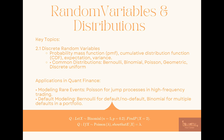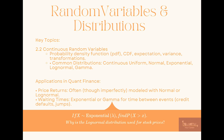For discrete random variables, you have the probability mass function, cumulative distribution function, expectation, and variance. Common discrete distributions include Bernoulli, binomial, Poisson, geometric, and discrete uniform. For example, the Poisson distribution can be used for jump processes in high-frequency trading, or the binomial distribution for modeling multiple defaults in a portfolio.